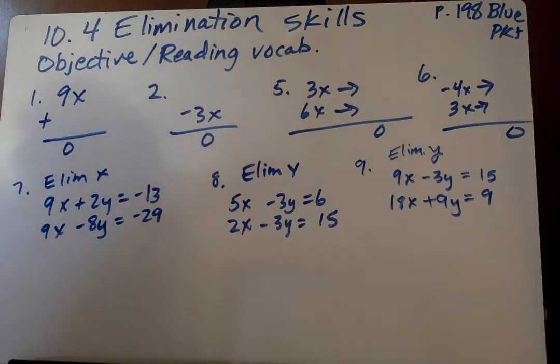Next, vocabulary. A zero-pair is used to eliminate a variable. A zero-pair is a pair of values whose sum is zero. Examples: 9 plus negative 9 is zero, x plus negative x is zero, and negative 5y plus 5y is zero.